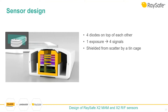The sensor is shielded from scatter by a tin cage with an opening on top. This makes it very insensitive to scatter and disturbances — we only see radiation coming from the tube. This design also makes it rotation-independent for any inhomogeneous fields, and it gives true air kerma as if placed free in air, even in a small geometry with a lot of scatter. This makes the impossible possible.